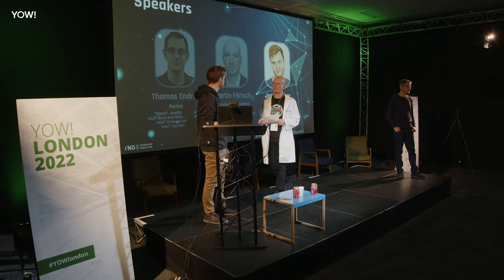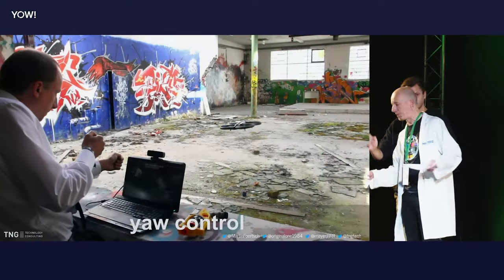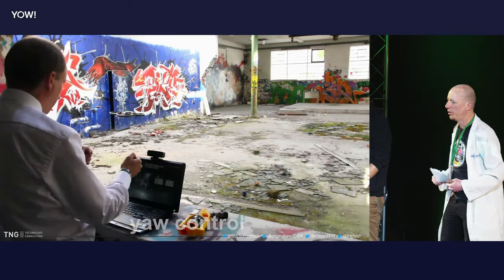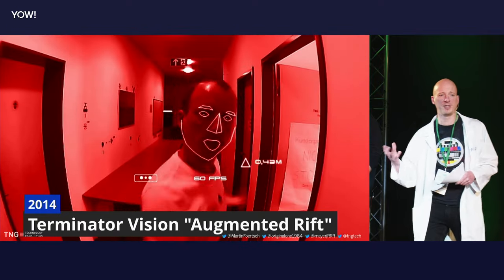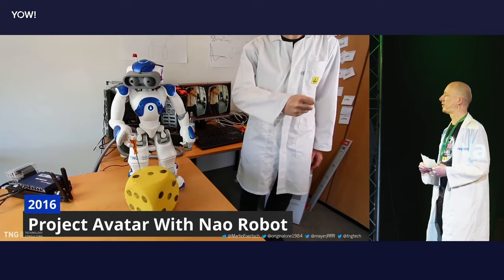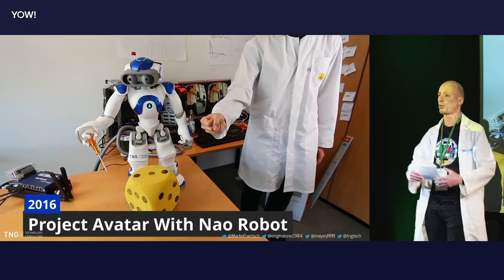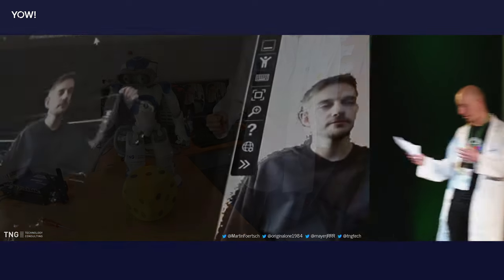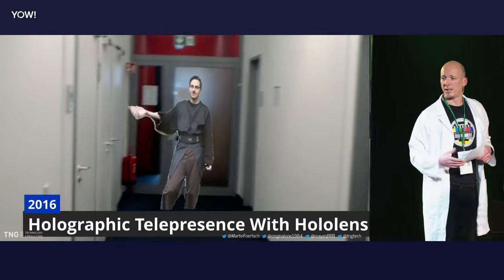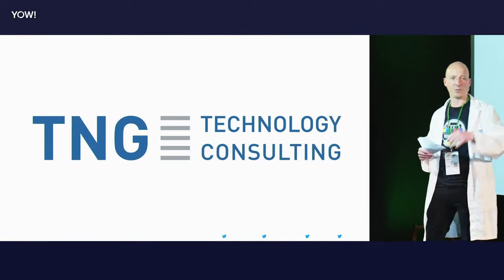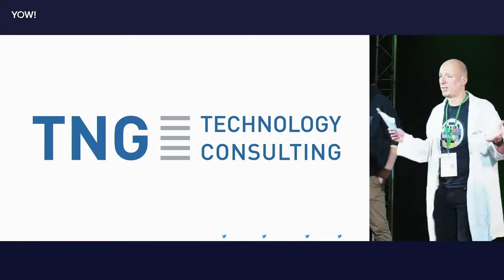So with that out of the way — Martin, what is the innovation hacking? It started in 2013. We controlled quadrocopters with bare hands based on 3D cameras. We had a Terminator vision where you can see the world through the eyes of a Terminator, a gesture-controlled robot based on the Kinect camera, and Star Wars-like telephone calls with the HoloLens. This is what we're typically working on.